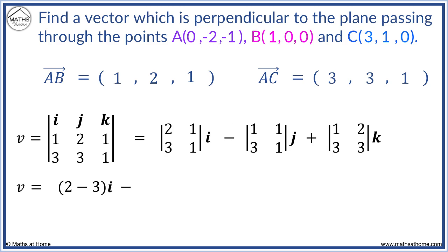For j, we have 1 minus 3. For k, we have 3 minus 6.